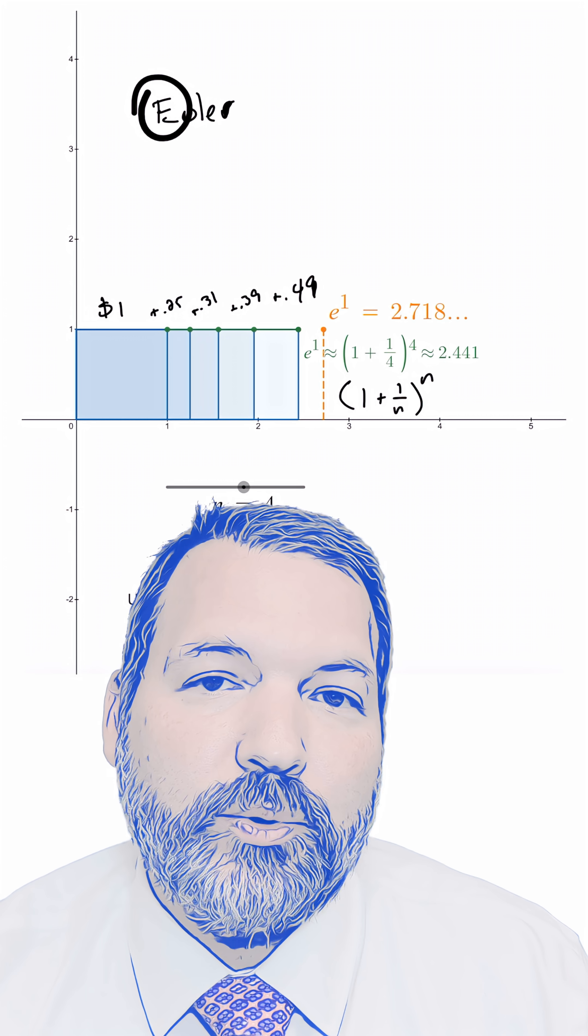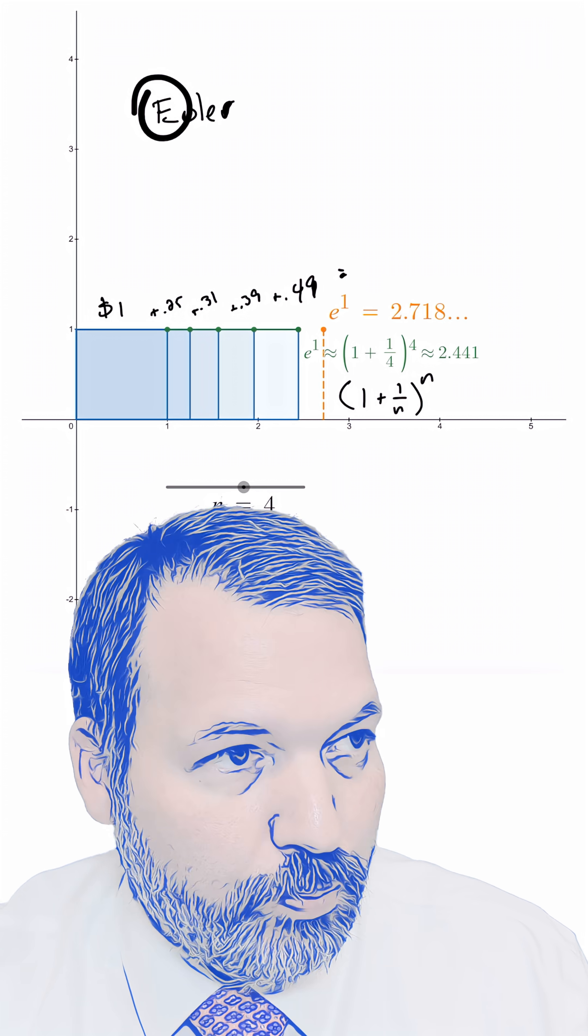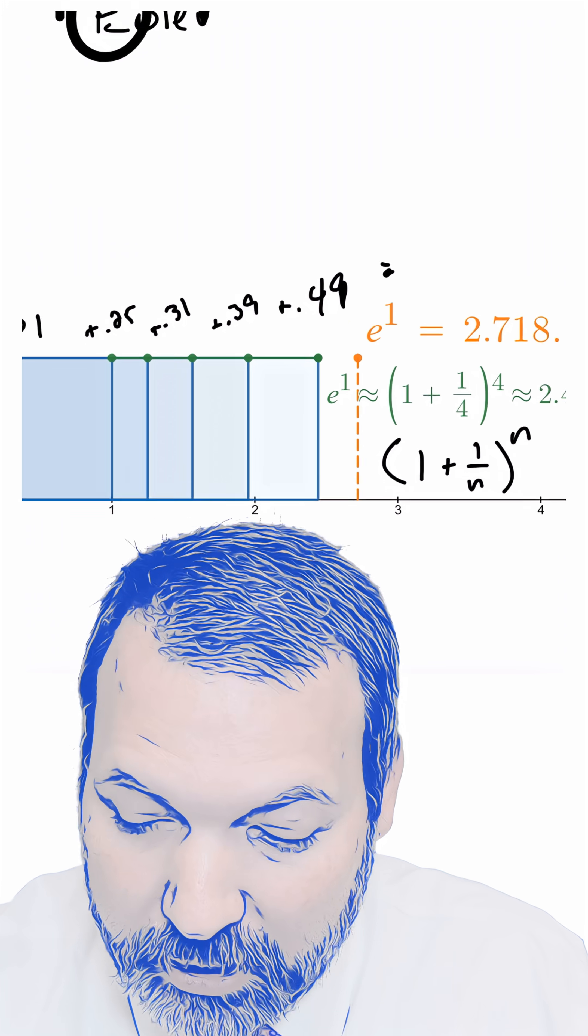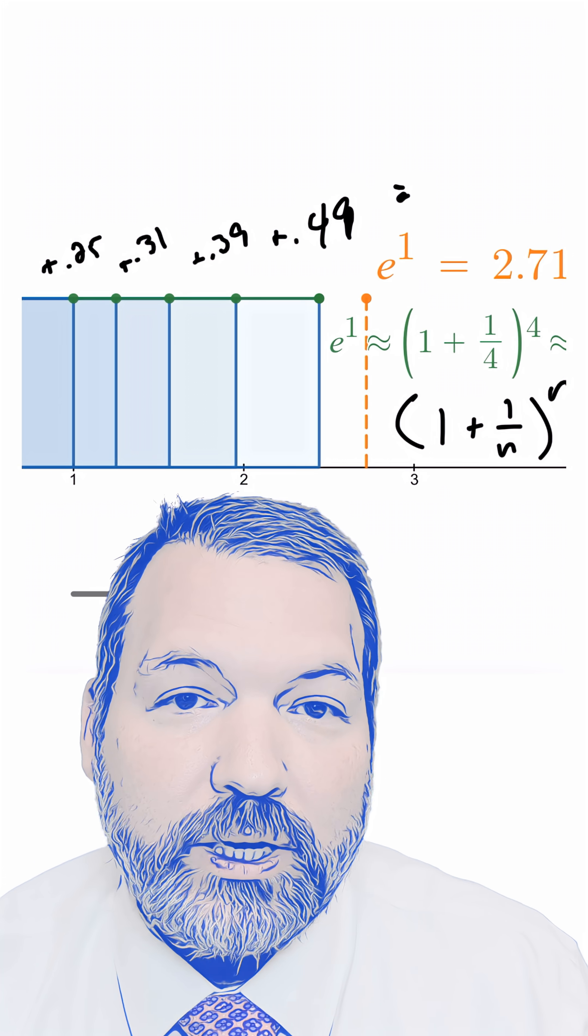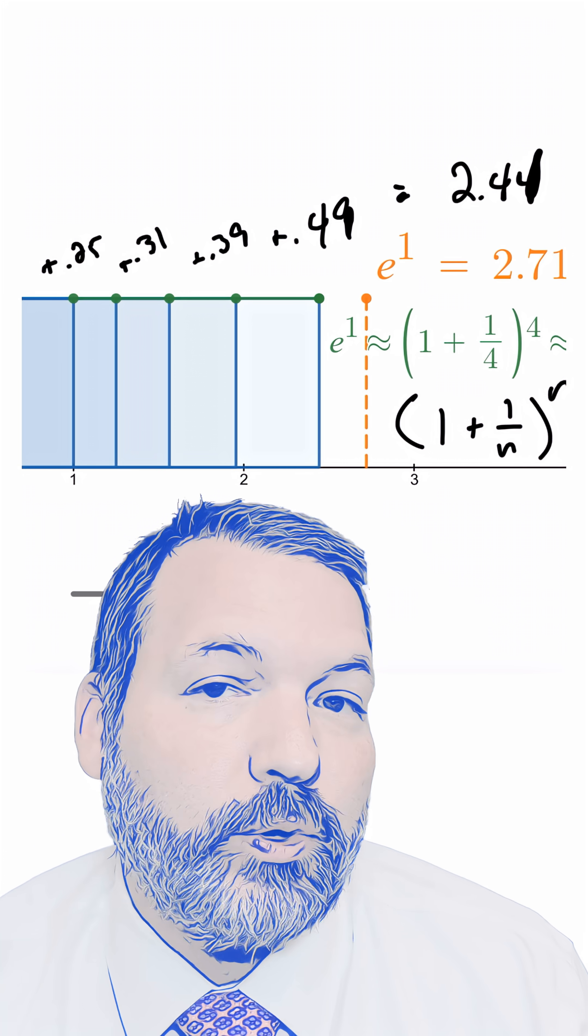So for example, when you increase the number of slices to four, you add 25 cents for that first check-in, put that money back in, you get 31 cents for the next check-in, 39 cents for the check-in after that, 49 cents for the check-in after that, and after a year, you have two dollars and 44 cents.